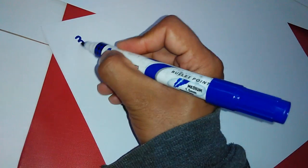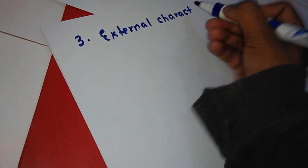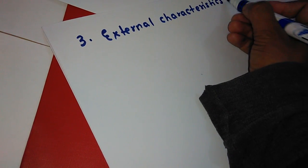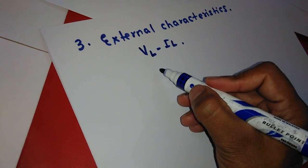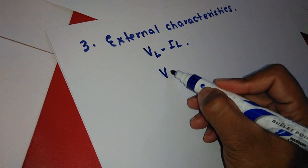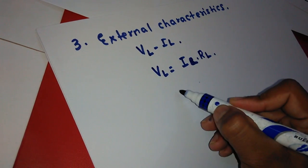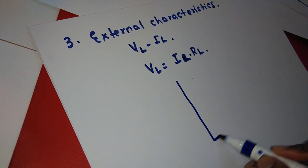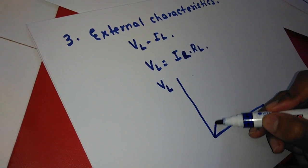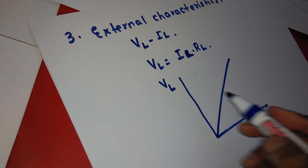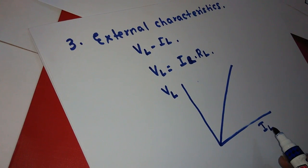Now we will see the third characteristic, the external characteristic, also called the load characteristic. It is a plot between Vl and Il. According to Ohm's law, V equals Il times Rl, so it is a proportional characteristic. We plot Vl on the y-axis and Il on the x-axis, and the characteristic is a straight line. This is the external characteristic of the DC generator. Thank you.